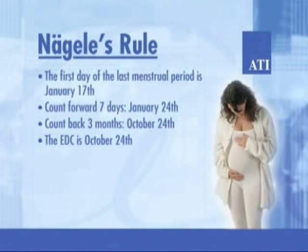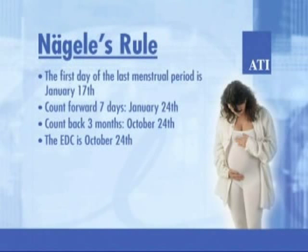Nagele's rule is the most commonly used formula for calculating the estimated date of confinement (EDC), also called the due date. Starting with the first day of the client's last menstrual period (LMP), move forward 7 days and count back 3 months to arrive at the EDC. For example, if the LMP was January 17th, add 7 days to get January 24th, then subtract 3 months to arrive at October 24th as the estimated date of confinement.